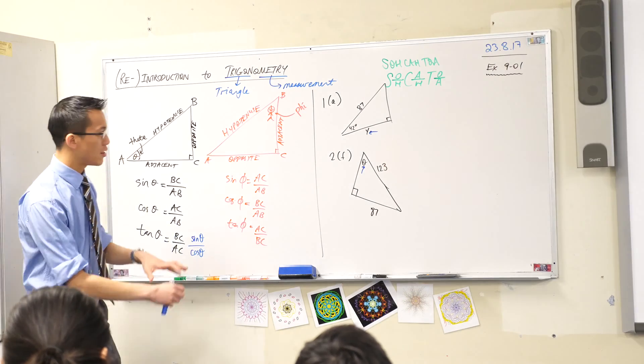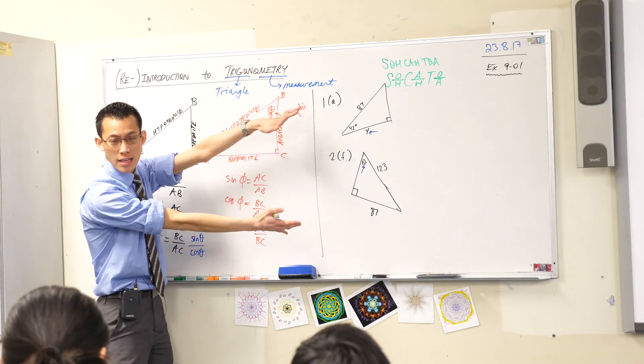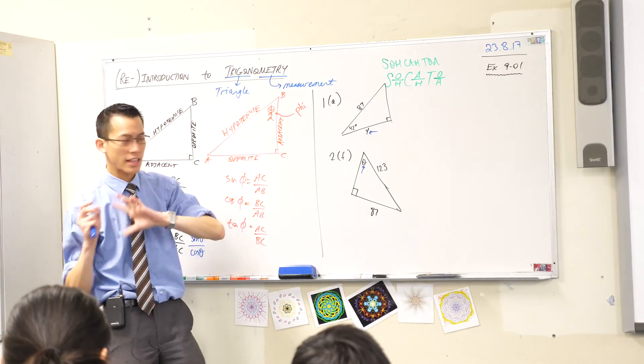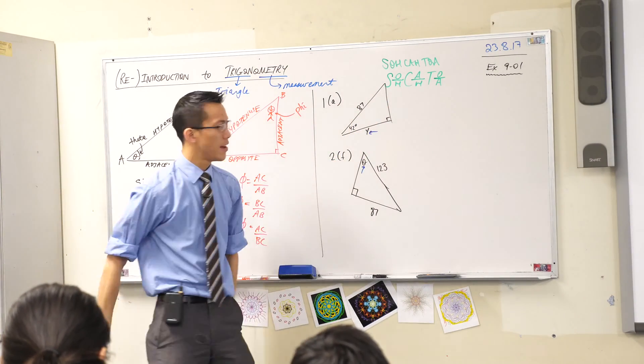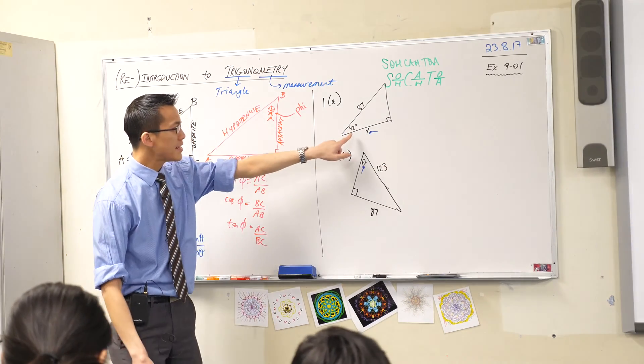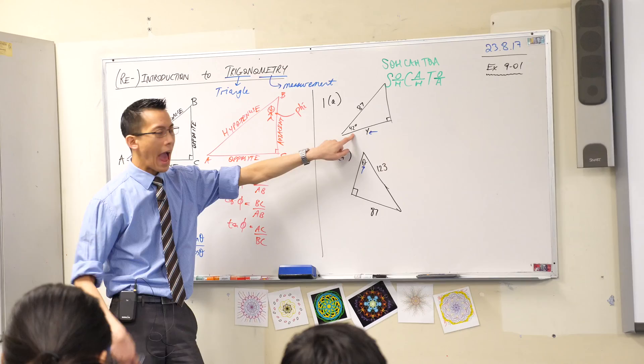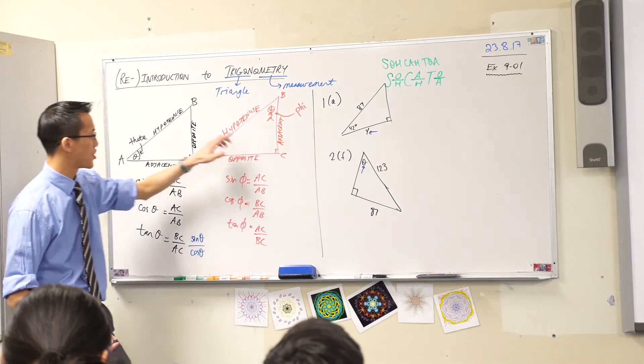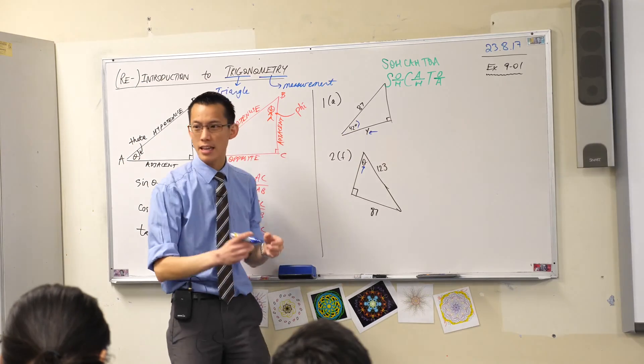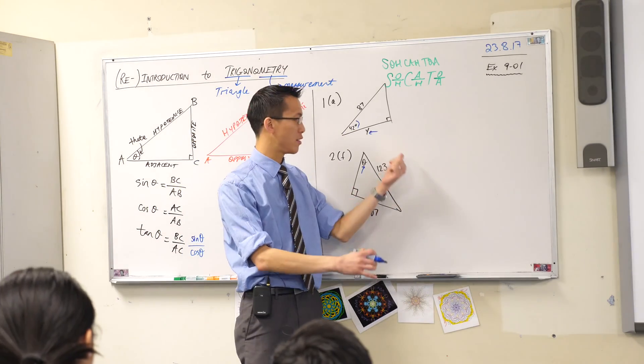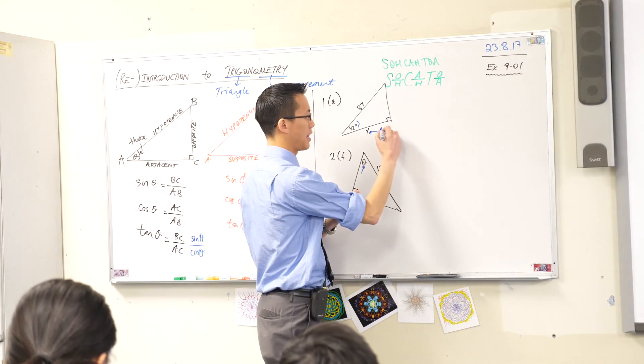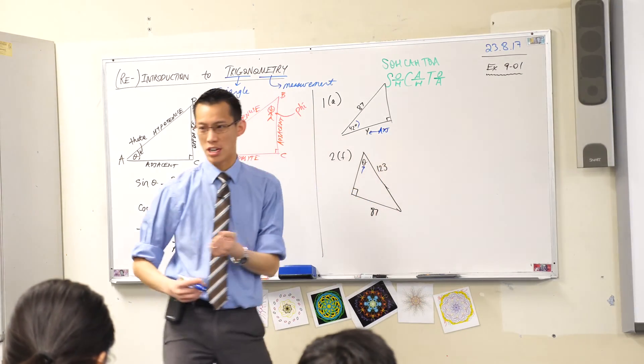Let's have a look at this one. Every time you look at a question like this, you should have this kind of framework in the back of your mind. The first thing you notice is you're after a side, and this is the angle you've got. How do these two relate to each other in terms of their position? Well, 42 degrees is right next to the side you're after. What's our technical word for that? Adjacent. So I'm going to label this ADJ for adjacent.